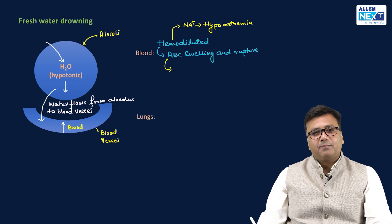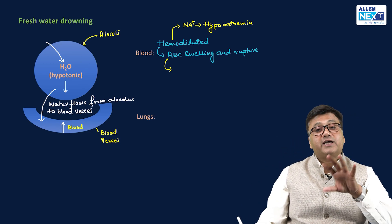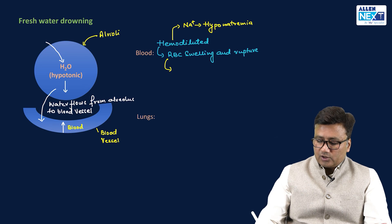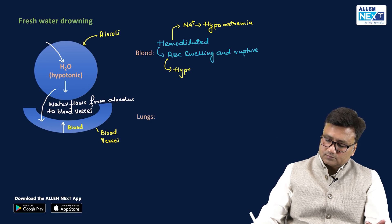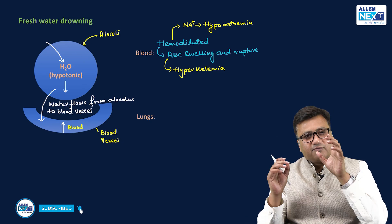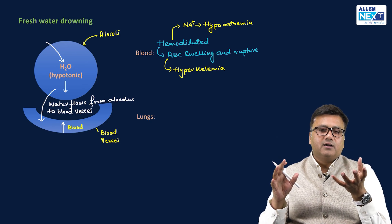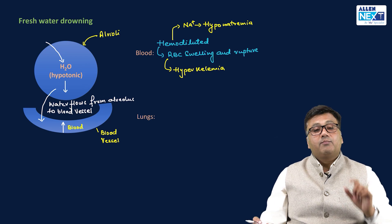Because of RBC swelling and subsequent rupture, a lot of potassium is going to leak out into the extracellular space. Since potassium is chiefly an intracellular ion, rupture of cells is going to cause hyperkalemia. So in fresh water drowning we see hemodilution with hyponatremia and hyperkalemia.